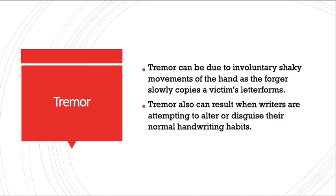The last characteristic is tremor. Tremors are basically involuntary, shaky movements present in handwriting. They might occur because a forger was scared when trying to copy a signature, or because the person was old in age or suffering from certain illness. Tremors can be found in handwriting when a person is trying to forge a signature, and sometimes tremors are deliberately incorporated in handwriting to misguide the questioned document examiner.